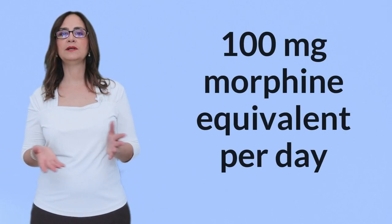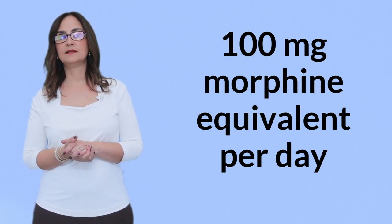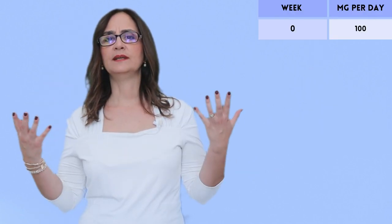So, for example, a person who was starting at 100mg of morphine equivalent per day would decrease the daily dose once a week as follows. Week 0, they were taking 100mg of morphine equivalent per day, and this could be divided into two doses per day.